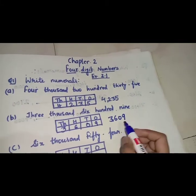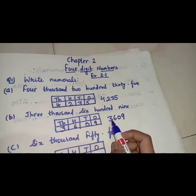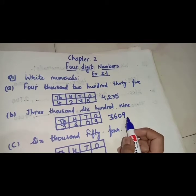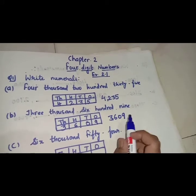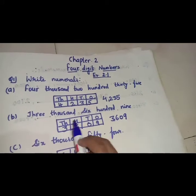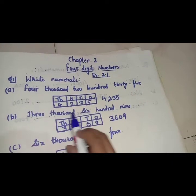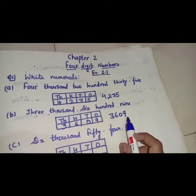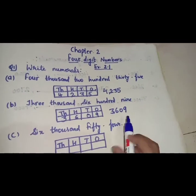Here you can see there are 4 digits in each number because these are 4-digit numbers. The thousands place always carries a 4-digit number.